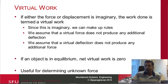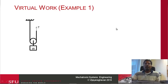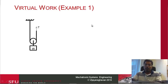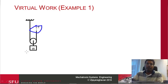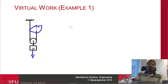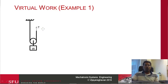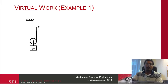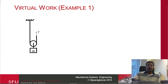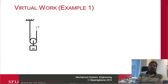Now we'll use the method of virtual work to calculate the tension in the rope of a pulley system. We have a weight W acting downward and we need to determine the tension T. We already know from statics this should be W/2, but let's verify using virtual work. We first examine what happens when we move the weight or the tip of the pulley by a particular distance.